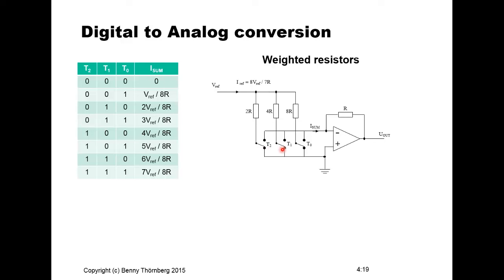If none of these switches are connected to the summing input branch, you will have zero voltage on the output. When you connect only the 8R resistor to the summing branch, the current on the input will be the voltage reference divided by 8R. If only the 4R, the current will be 2 times the voltage reference divided by 8R, and if only the 2R, we will have 4 times the voltage reference divided by 8R. Adding these combinations sums the current at the operational amplifier input to give the corresponding output level.